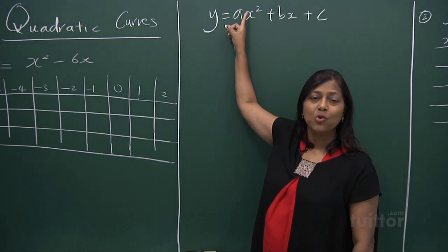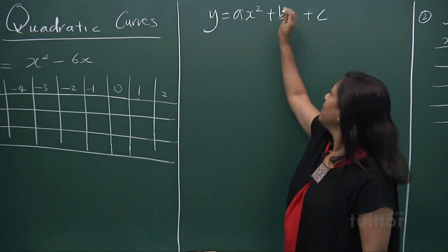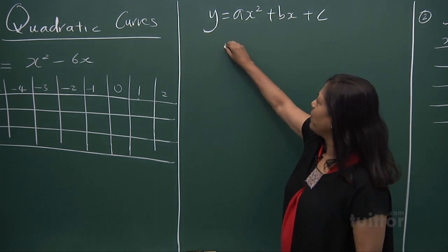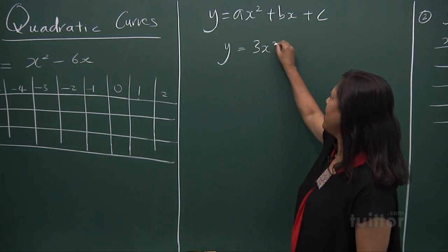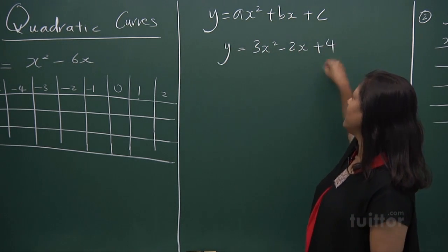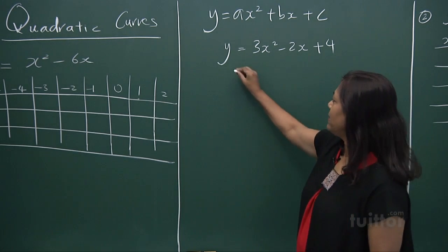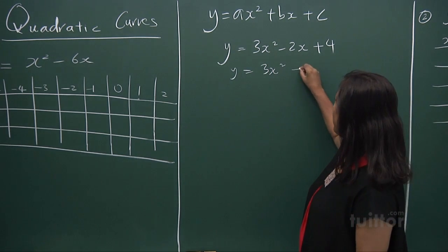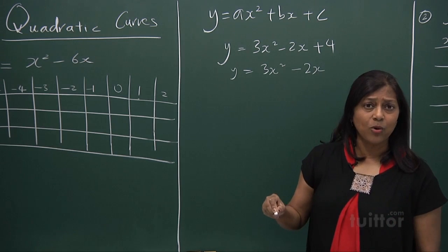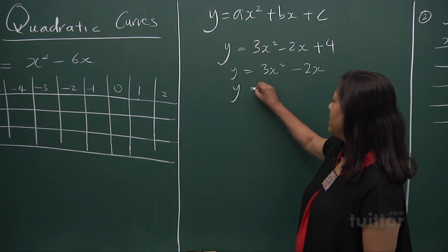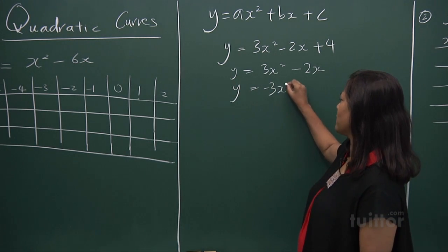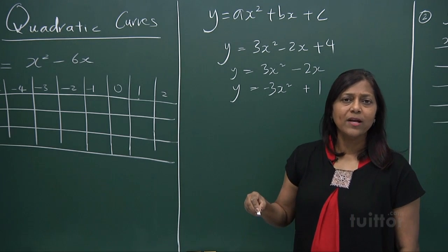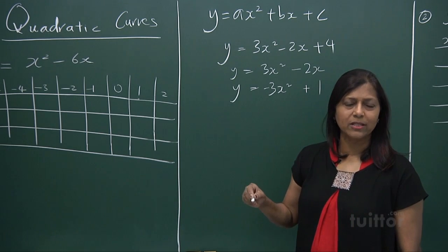Please recognize that in a quadratic equation, b can be zero and it's still called quadratic. If we have an equation like 3x squared minus 2x plus 4, yes, it is quadratic. But 3x squared alone is still quadratic. Or if y equals minus 3x squared plus 1, it is still quadratic. You first need to recognize what a quadratic equation is.